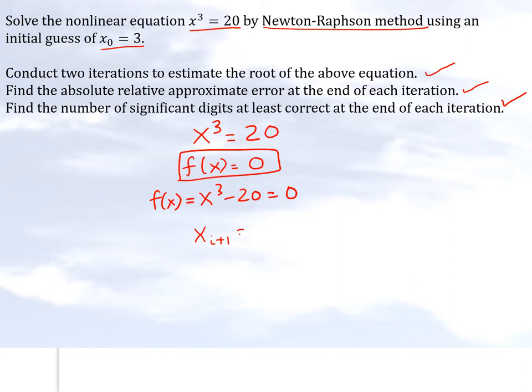Now if we recall our formula for Newton-Raphson method, it looks like this. What that implies is that we need to calculate the derivative of the function as well. So let's go ahead and do that. In that case, f prime of x will be the derivative of x cubed minus 20, and we get 3x squared.